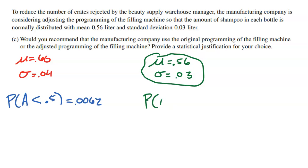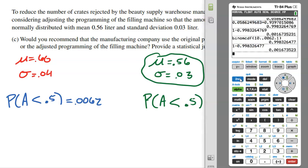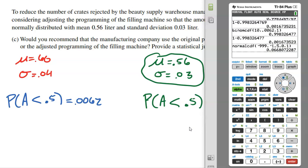Under the new parameters, what's the probability that a bottle has less than 0.5 liters? We need the Z-score again: (0.5 − 0.56) ÷ 0.03 = −2.0. Using normalcdf from −99 to −2, we get a probability of 0.0228.